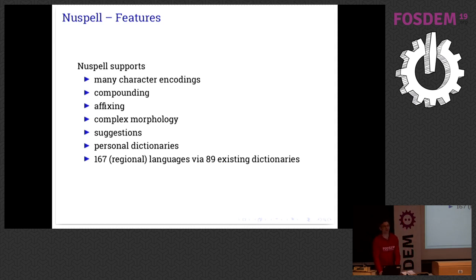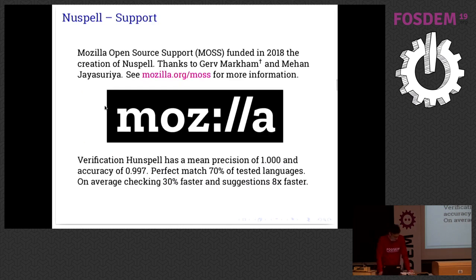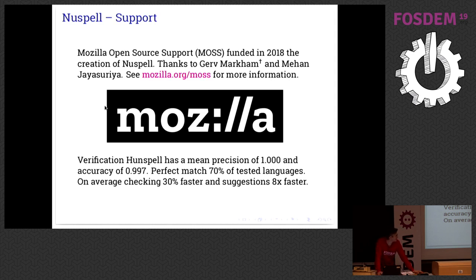In order to do this project we applied for a grant at Mozilla, and they gladly gave us one. I also want to thank Mozilla for doing that — especially Gerv, who's no longer with us, and Mian. At the end of this project we did a verification with HunSpell on how well our library is performing, and it's almost exactly the same as you can see by the numbers. It's already a lot quicker even though we didn't do any new optimizations — only porting it to a pure C++ implementation.